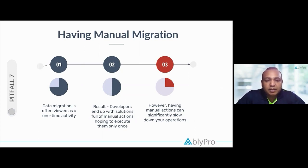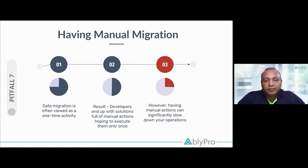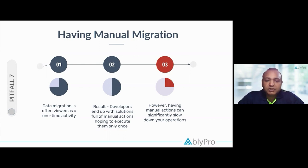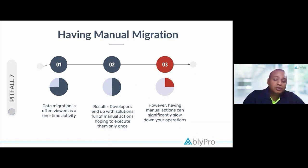Data migration is often viewed as a one-time activity, but it's not — it's divided into phases. People think that since it's a one-time activity, manual migration will work. But since it's done in phases, we need to automate those processes, because you may have to run data migration on a live staging environment repeatedly. When there are repetitive processes, it is advisable to run automation on them, otherwise it becomes a tedious task.